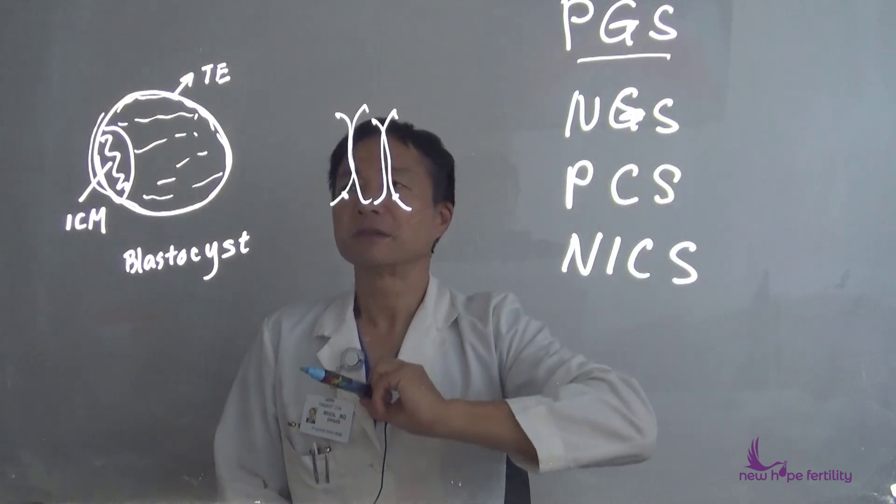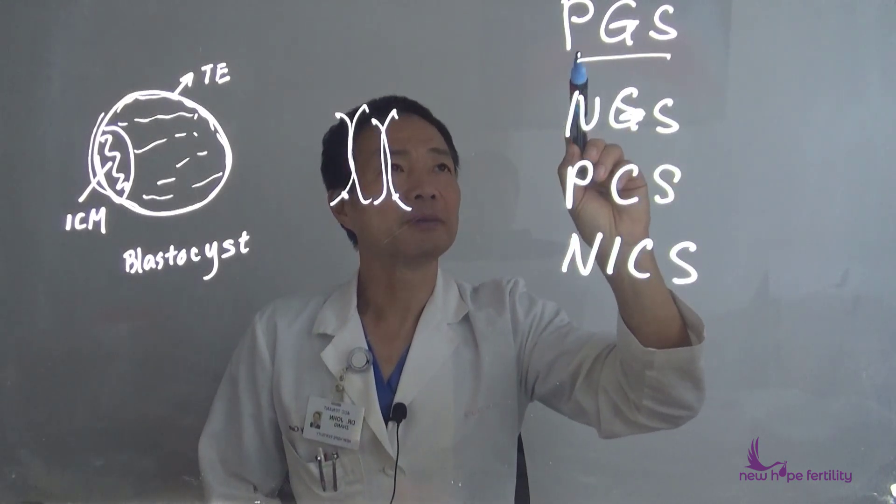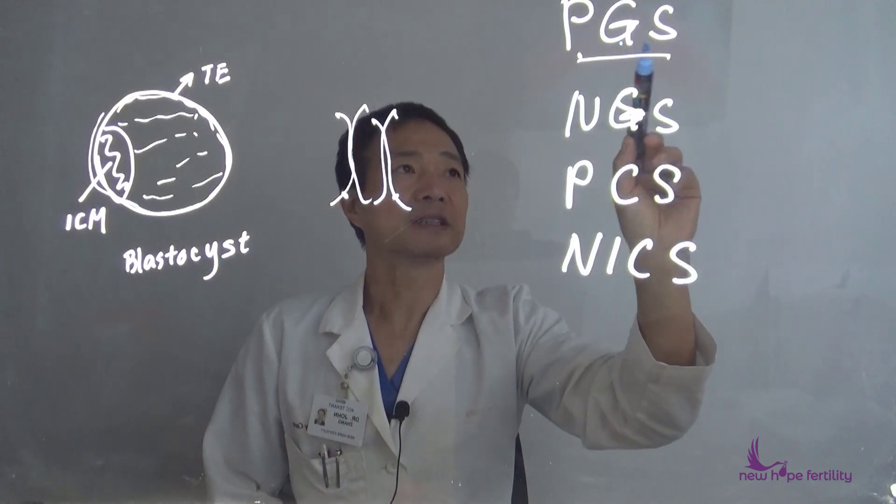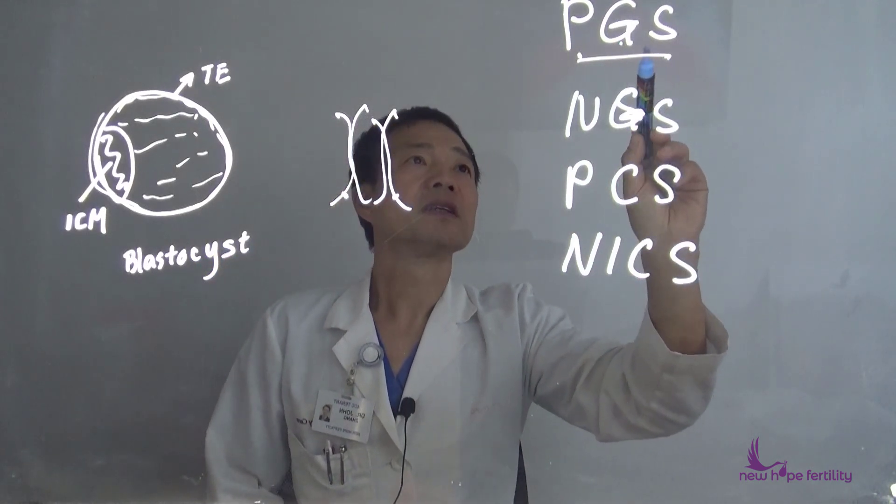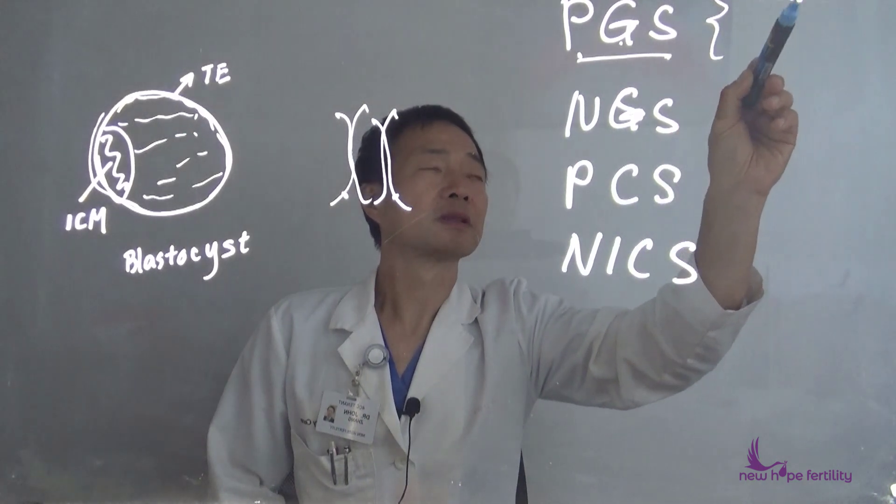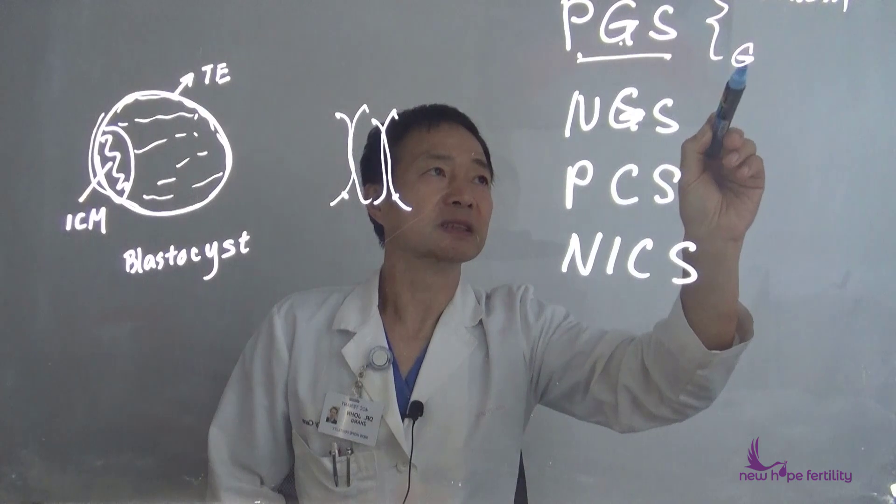PGS stands for pre-implantation blastocyst-assisted embryo genetic screen test. And this usually includes the chromosomes and special genes.